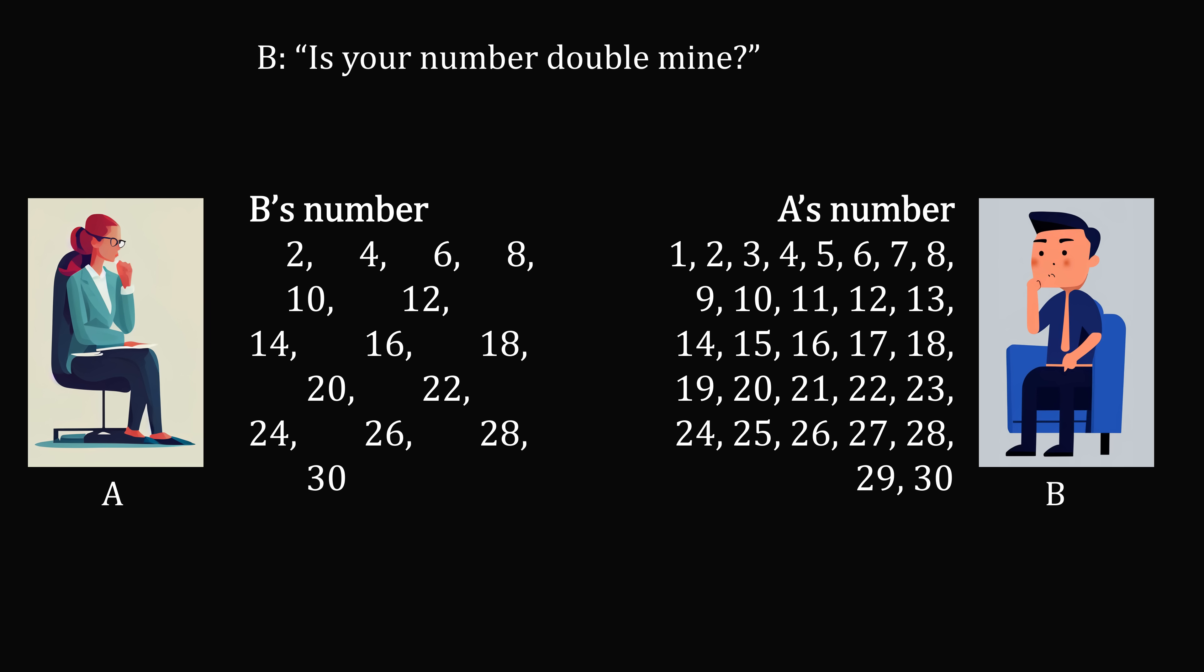Then B asks, is your number double mine? A replies, I don't know. A already knows that B's number is an even number. So in order for A's number to be possibly double that, it has to be double an even number, which means that A's number must be a multiple of 4. So B can eliminate all other possibilities. We are just left with the possibilities of 4, 8, 12, 16, 20, 24, and 28.